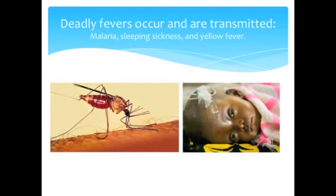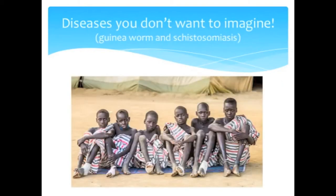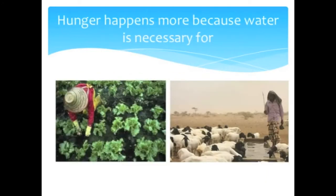If civil engineering does not remove contaminated pools of water, malaria, sleeping sickness, and yellow fever are caused by mosquitoes, debilitating and killing the people. Diseases like guinea worm and schistosomiasis are common. Hunger is more common because water is necessary for growing food and raising animals.